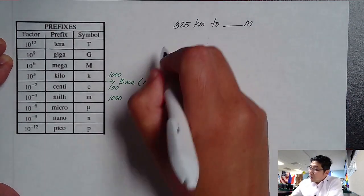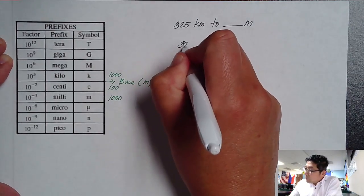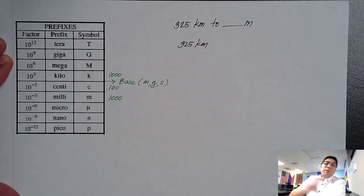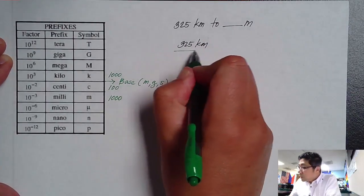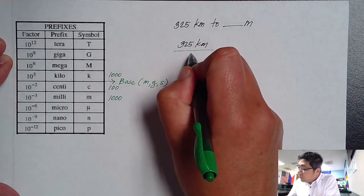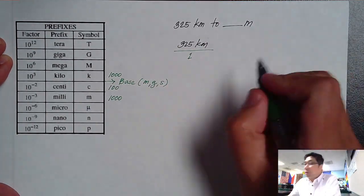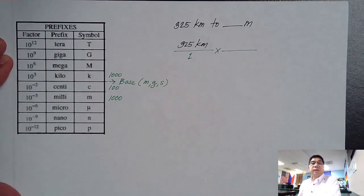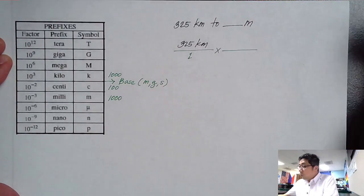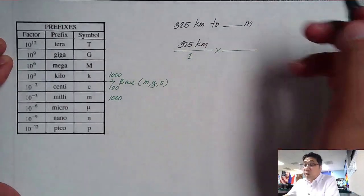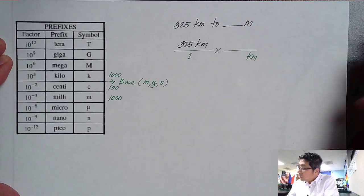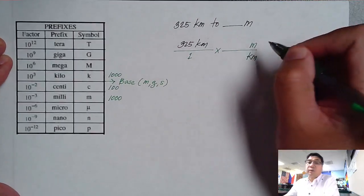Step one: let's copy the given, 325 kilometers. We all know that this kilometers, the given unit, is a fraction, so let's divide it by one. And then let us place our kilometers, the one that we wanted to convert to, at the bottom point so we can cancel the kilometers, and then meter is on the top one.